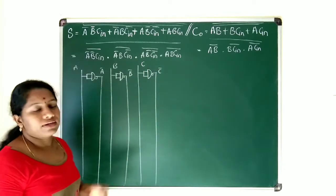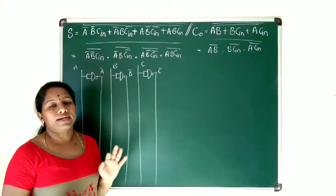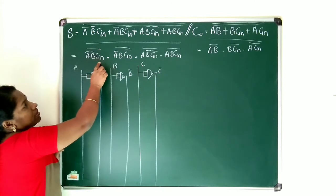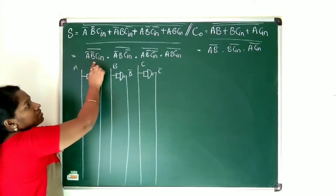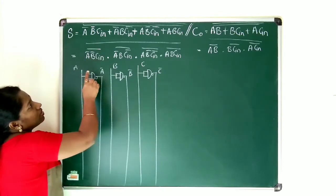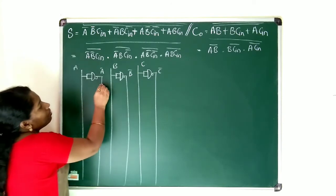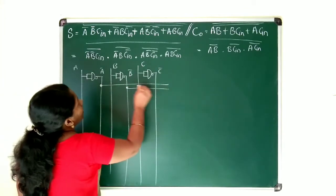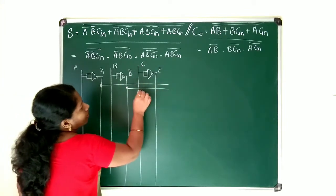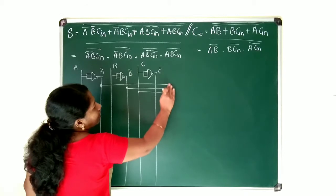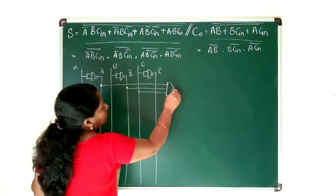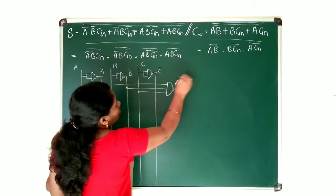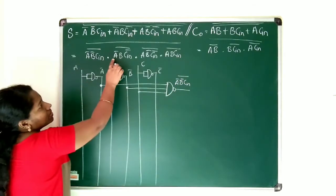Now take the first term: (a̅b̅c_in)̄. This is a NAND gate function. I take a̅, b̅, and c_in and connect them to a NAND gate. The output is (a̅b̅c_in)̄.